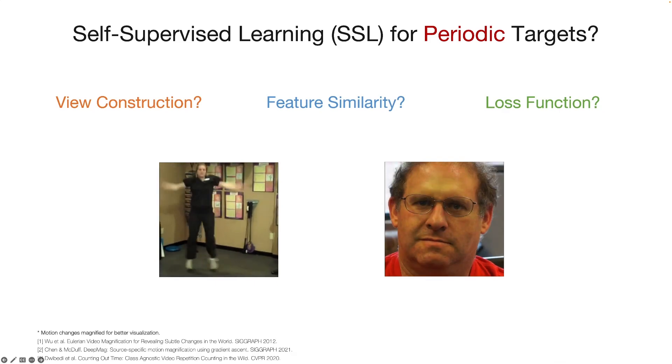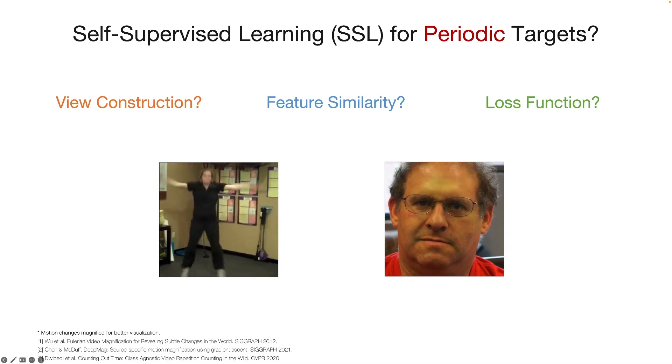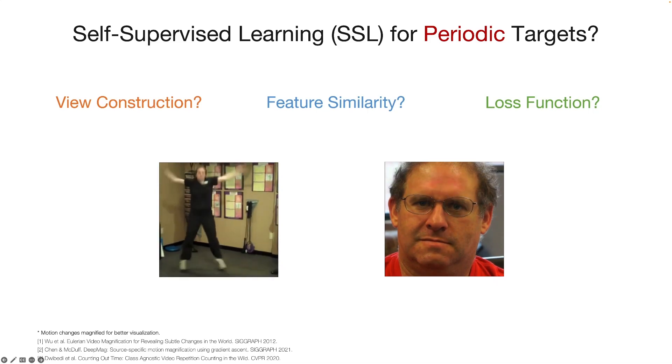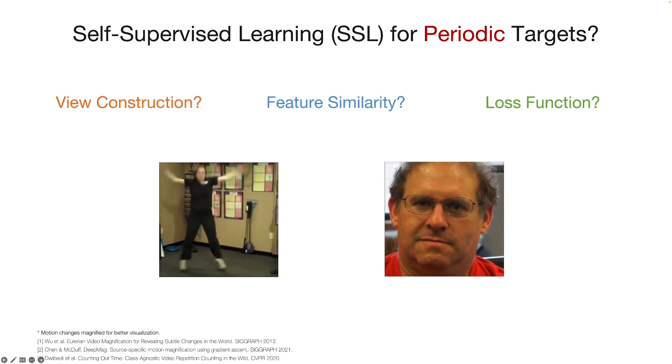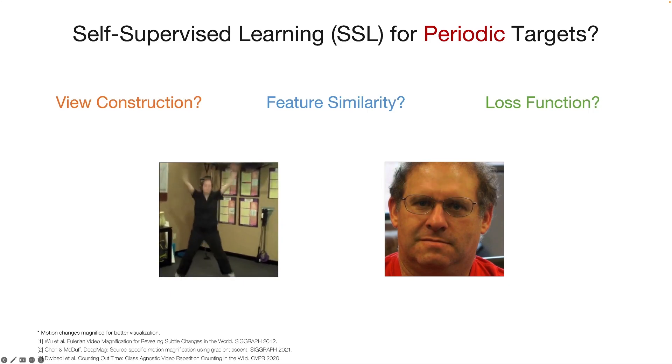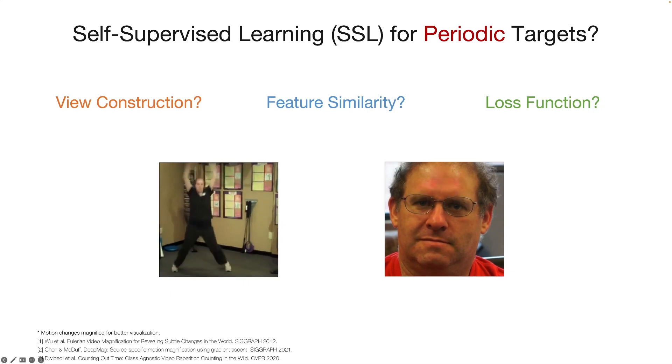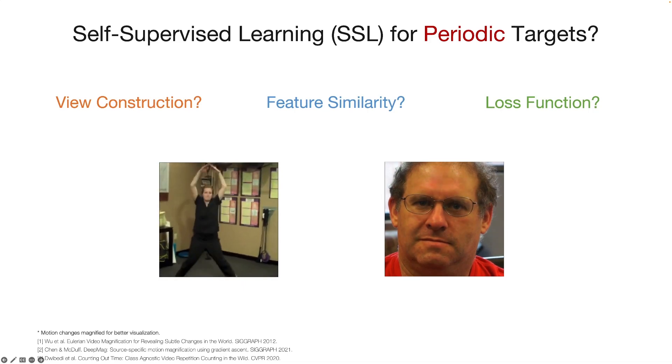Moreover, in sensing human physiology from videos, we want to extract cardiac or breathing estimations. Here, we magnify the blood volume changes for better visualization. Again, the identity, pose, or the angle of the person are not important, but rather the repetitive pattern of the blood volume pause across time is more important.